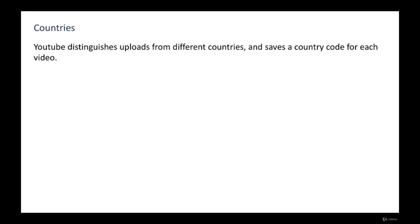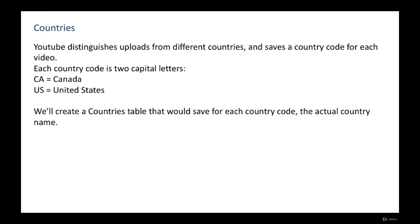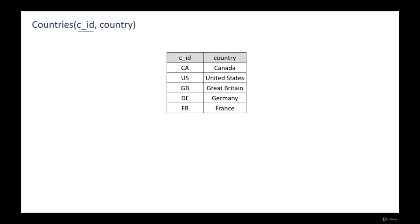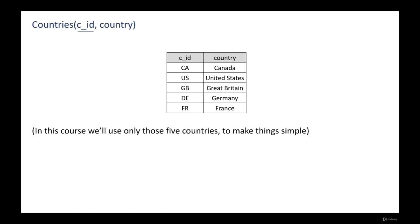YouTube distinguishes uploads from different countries and saves the country code for each video. Each country code is two capital letters — for example CA is Canada and US is the United States. We will create a countries table that saves for each country code the actual country name. The schema of the countries table has two columns: the CID, which is also the primary key and is the country code, and 'country' which is a string containing the country name. In this course we'll use only five countries: Canada, United States, Great Britain, Germany, and France.